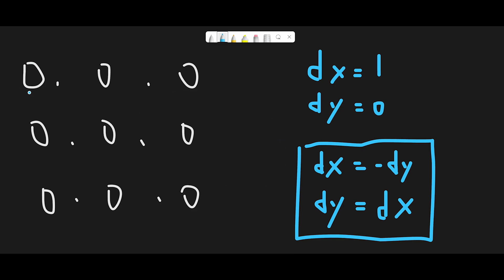We start from (0, 0) and update it to 1, then move next. This position is not out of bounds, so update it with 2, then move next and update with 3. Now the next move is out of bounds, so I apply the formula to dx and dy.